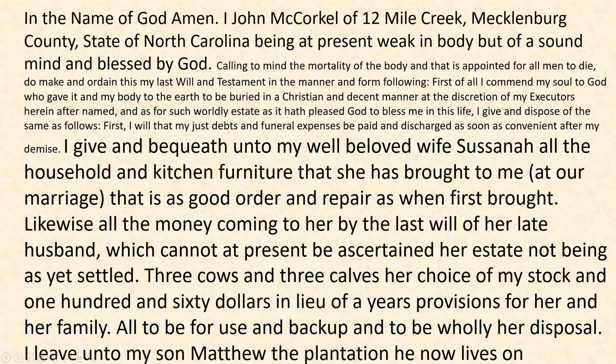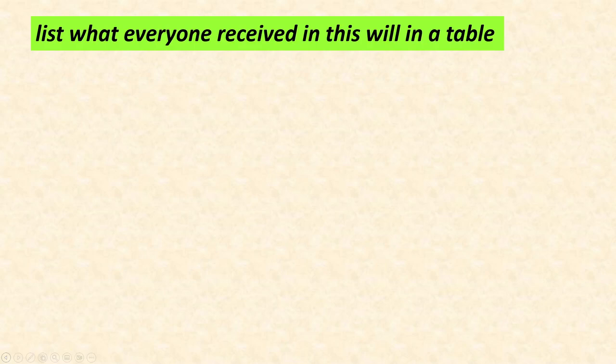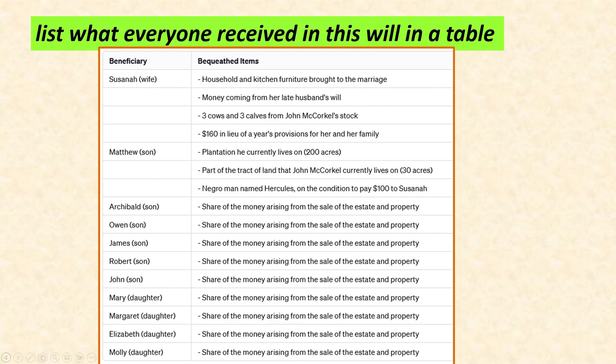For document analysis, this is the will of my fifth great-grandfather, John McCorkle. You can see he's giving stuff to Susanna — furniture, cows, calves, all sorts of things. So I fed this into ChatGPT. I'll show my prompts in green. The prompt was: list what everyone received in this will in a table. That's very informal. And boom — here comes: beneficiary, bequeathed items. Susanna got the furniture, money, the cows. Matthew got the plantation, and so forth. Pretty darn good, and if you go through it, this is actually fairly accurate.